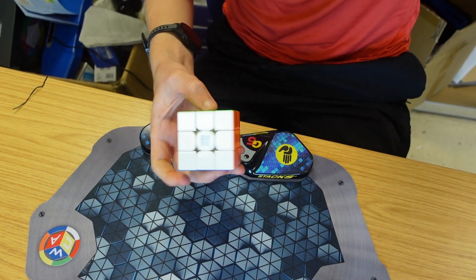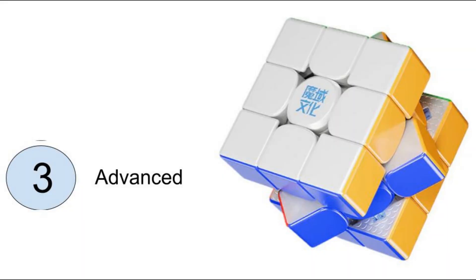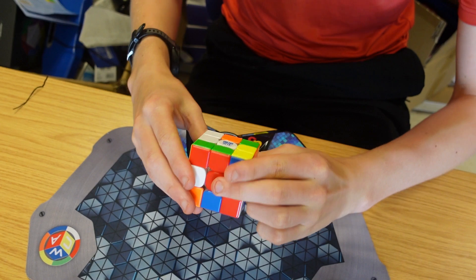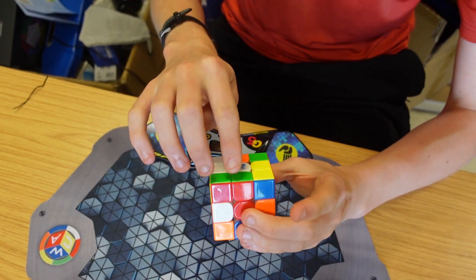We're going to solve the yellow cross on the bottom and we're going to try and preserve this pair here. This is pretty much top of the range for CFOP.